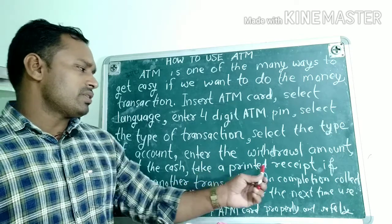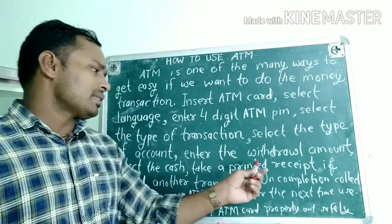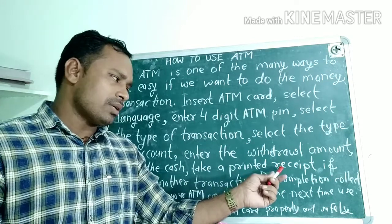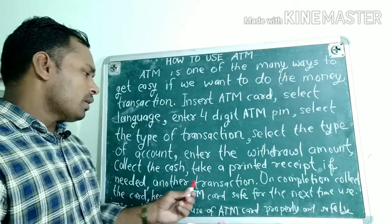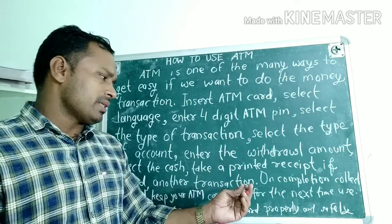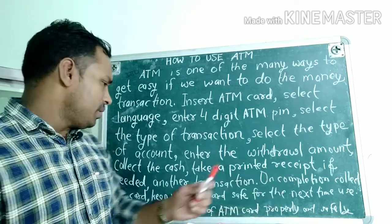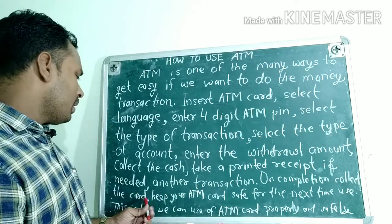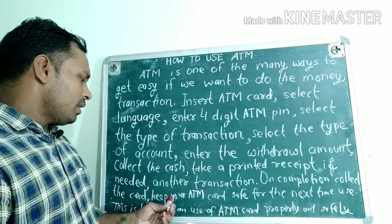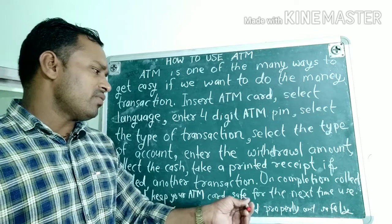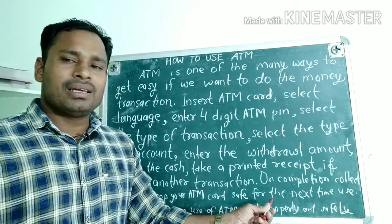Take a printed receipt if needed. If you want, a printed receipt comes out and you can take that as well. After that, if needed, you can do another transaction. Once everything is complete, you can do another transaction.